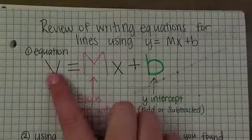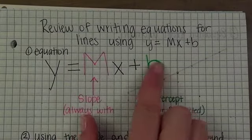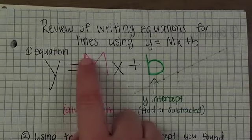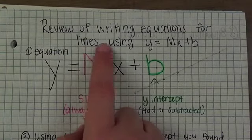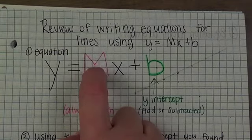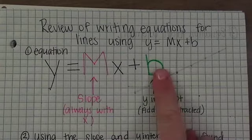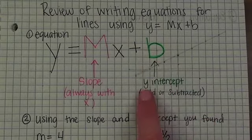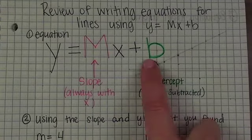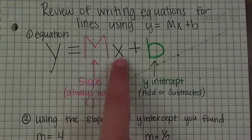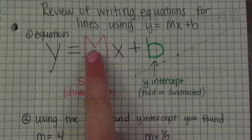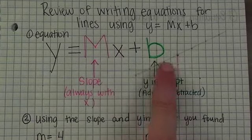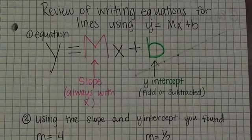Remember y equals mx plus b. The m is always the slope — think of it like a mountain, like you're skiing on the slopes. The b is the y-intercept, so that's always the part that you add or subtract at the end. The slope is always with x, and you can always tell which one's the y-intercept because it's always adding or subtracting at the end.